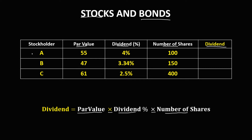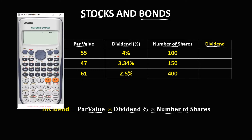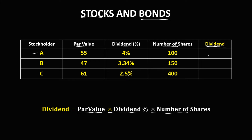To find the dividend for Stockholder A, the dividend percentage is 4%. We need to convert 4% to decimal: 4 divided by 100 equals 0.04. Then multiply by the par value of 55, then by the number of shares, which is 100. So the dividend for Stockholder A is 220.